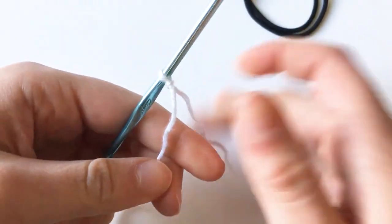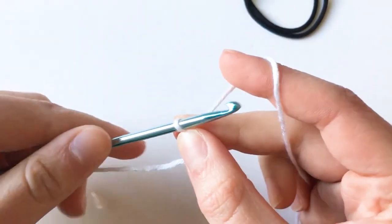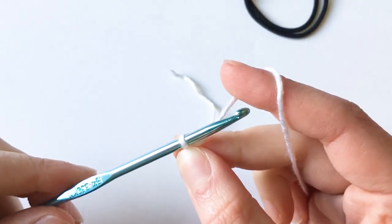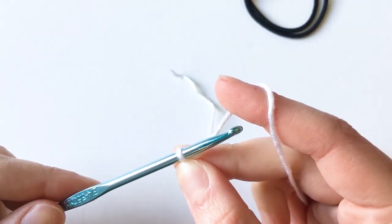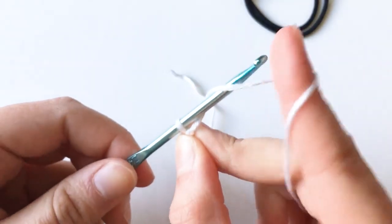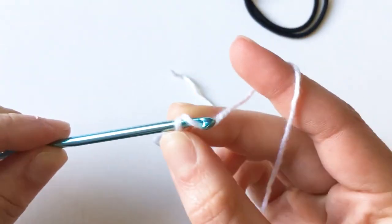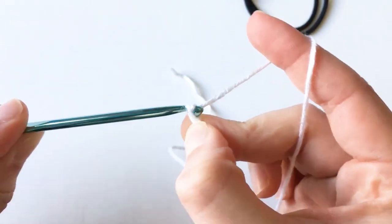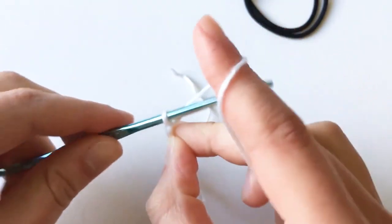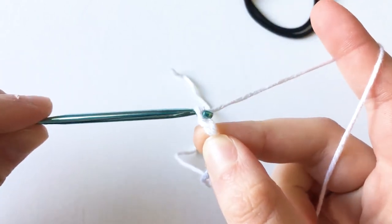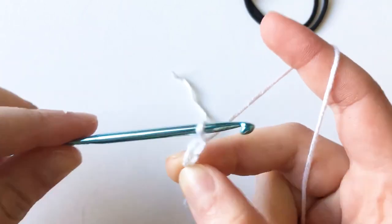Now we're going to chain 10. To chain, yarn over so wrap the yarn around the hook and then pull through that loop on your hook and that is one chain. You're going to want to make 10 of these.